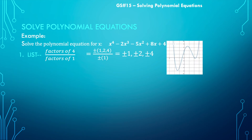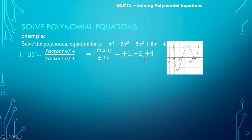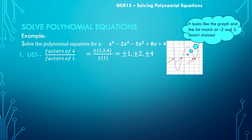Looking at this graph and comparing it to my list of possible rational zeros, I can see that plus or minus 1 is not a zero on this graph, but plus or minus 2 definitely is. Plus or minus 4 doesn't work either. So negative 2 and positive 2 are my smart choices, and I'll choose negative 2 to start.